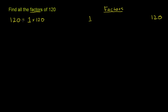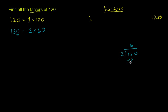Let's think about whether 2 divides into 120. Does 120 equal 2 times something? You can immediately recognize that 120 is an even number — its ones place is a 0. As long as the ones place is 0, 2, 4, 6, or 8, the whole number is even and divisible by 2. You can think of 120 as 12 times 10, or 2 times 6 times 10, which is 2 times 60. Dividing it out: 2 goes into 12 six times, bring down the 0, 2 goes into 0 zero times — no remainder. So it goes 60 times.